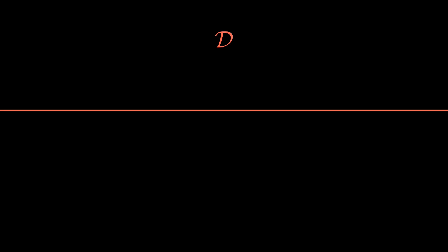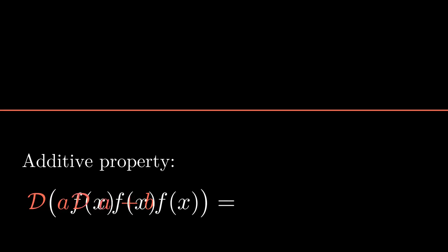Let's look at the differential operator more closely under this line. Since it's linear, we know it commutes with scalar multiplication. And it's additive. In other words, it distributes over addition.